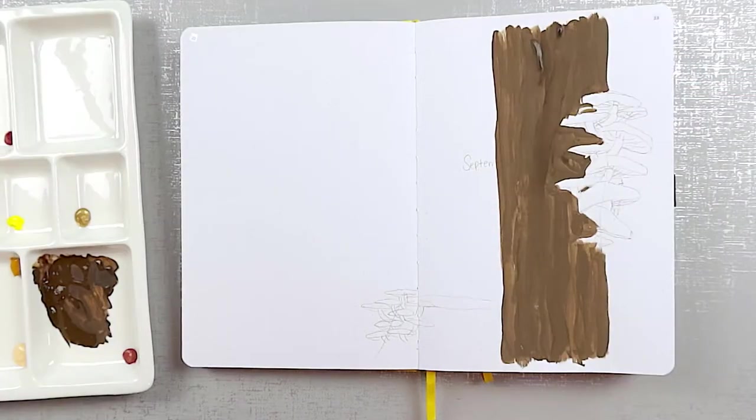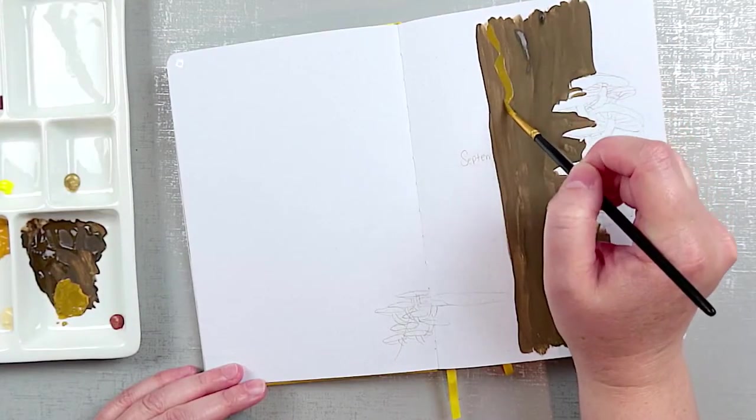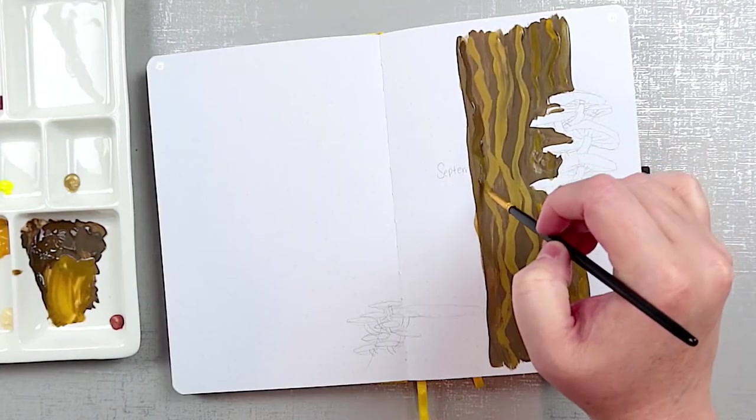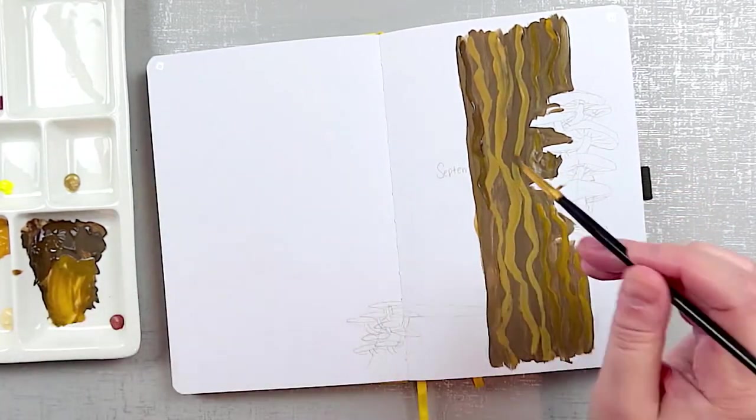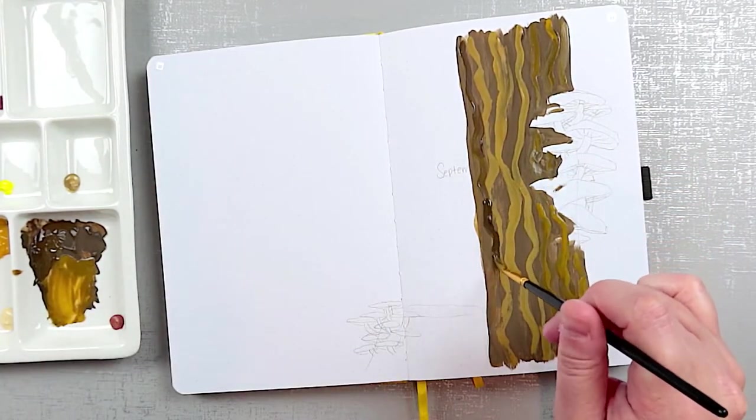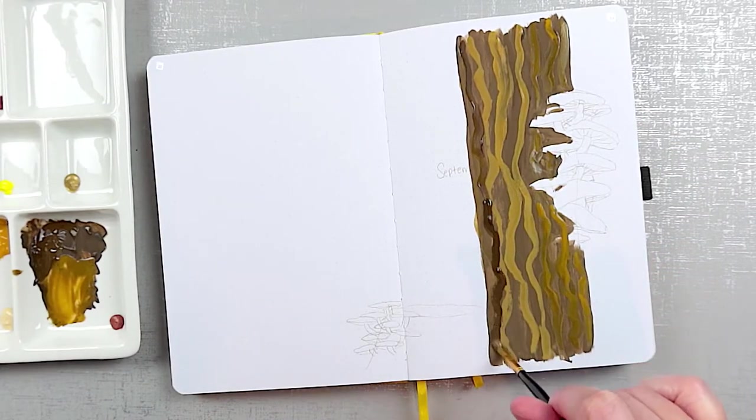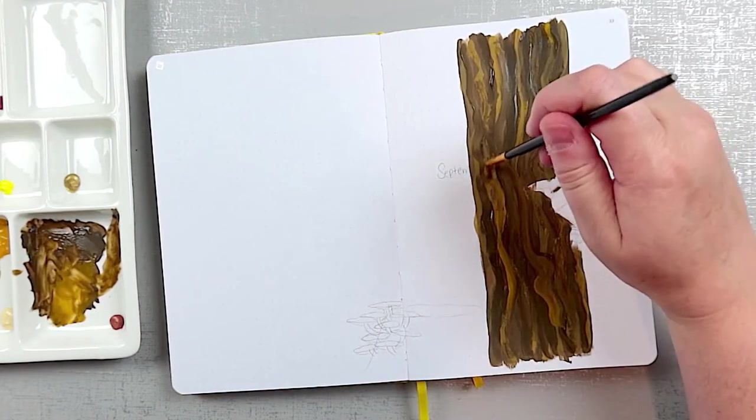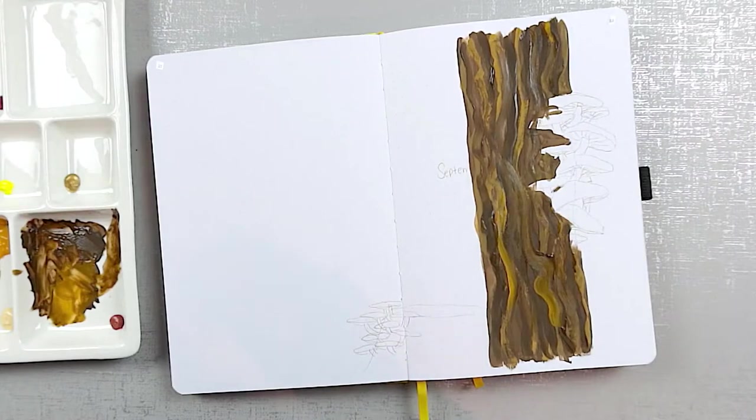Once it's dry I'll add more layers of various colors to add depth. Even though I could paint over the brown with a lighter color for the mushrooms with the gouache, unlike watercolor which can't really do that, I decided to leave space for the mushrooms so I didn't have to work as hard to paint them.